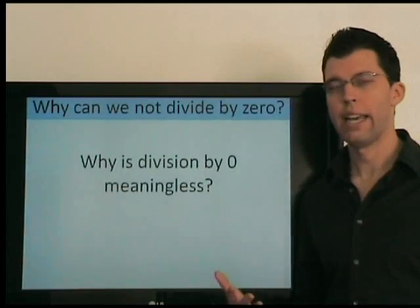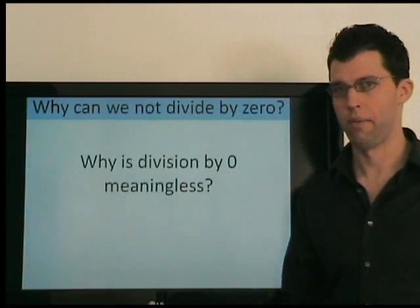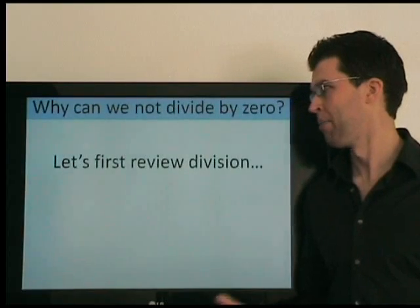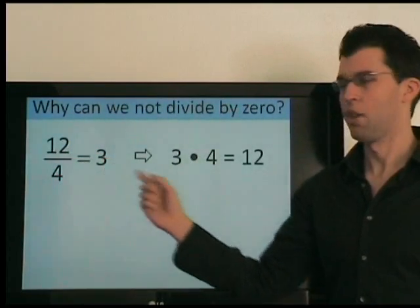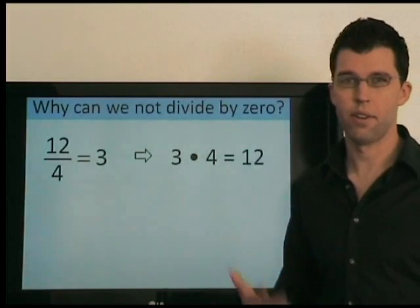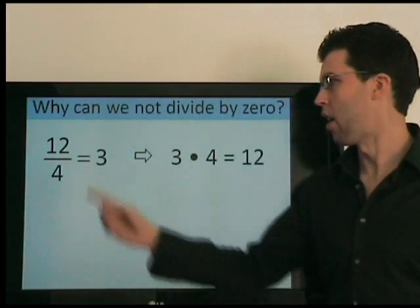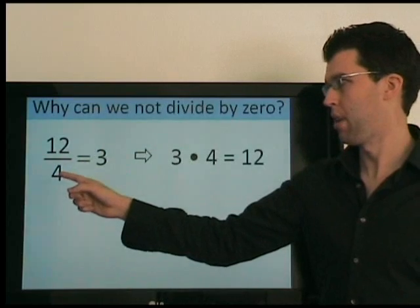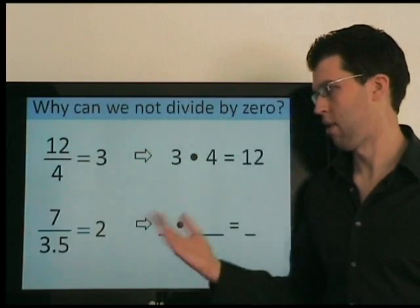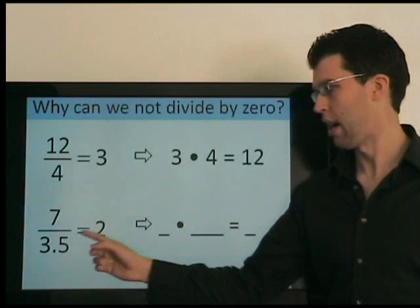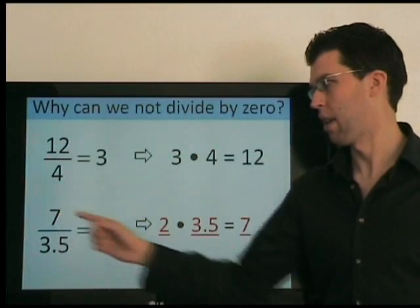So why can we not divide by zero? Let's first review division. We can write 12 over 4 equals 3 using multiplication, which is the inverse operation of division. Our answer times the denominator equals the numerator. This is useful for verifying our answer. So 2 times 3.5 equals 7.